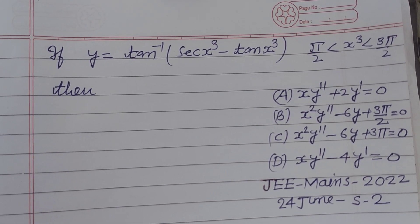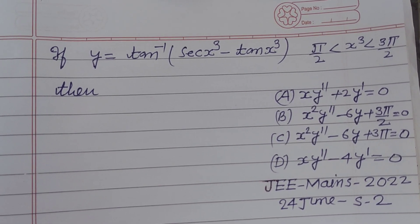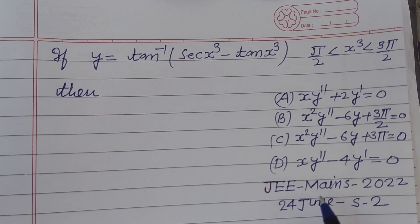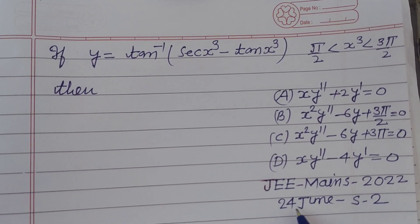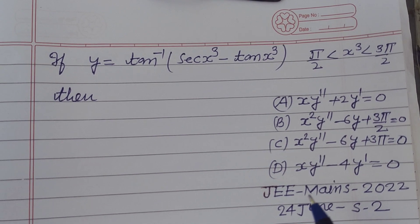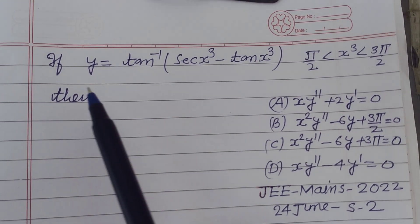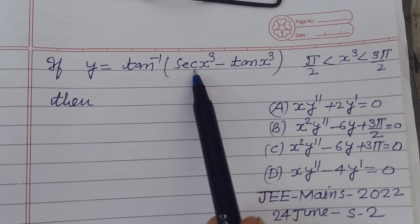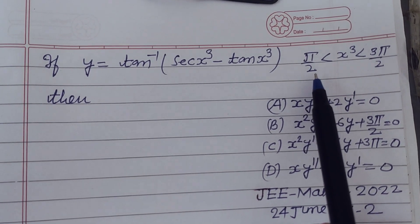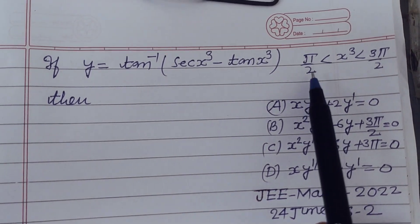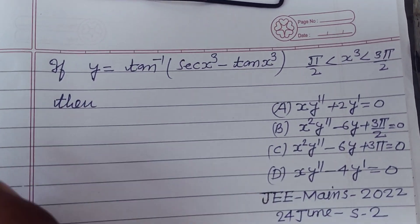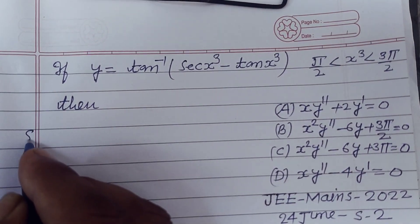Hello student, warm welcome to this YouTube channel. This is a question from JEE Mains 2022, 24 June shift 2, based on differentiation. If y equals tan inverse of sec(x³) minus tan(x³), and x³ lies between π/2 and 3π/2, then which of the following is correct?